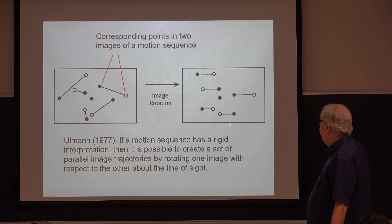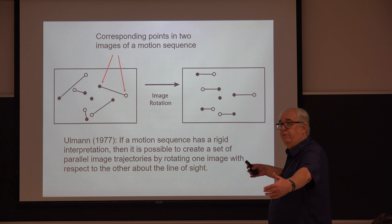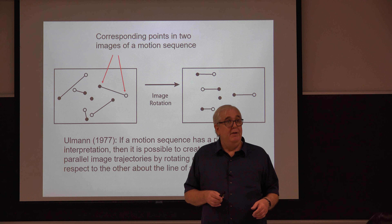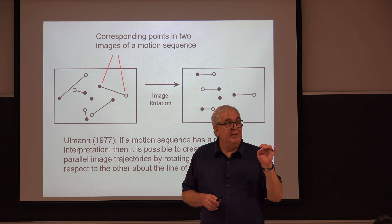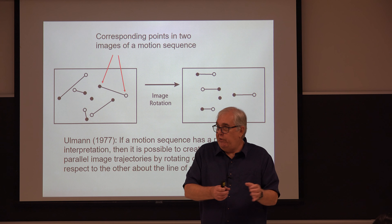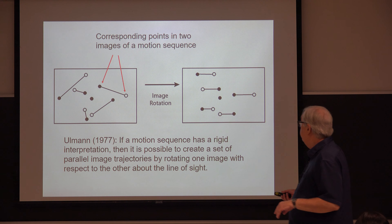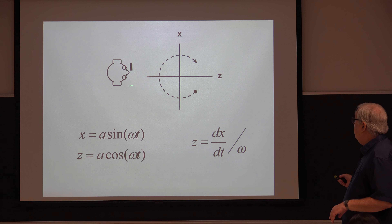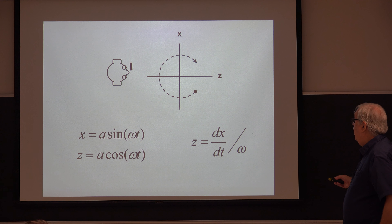Ullman proved from this situation that in the two-view case there's a one-parameter family of solutions, whereas in the three-view case you get a unique solution. In the two-view case you get a one-parameter family. Let me explain how that works.